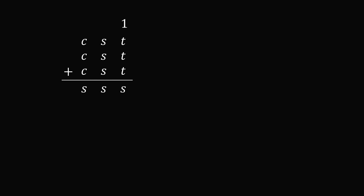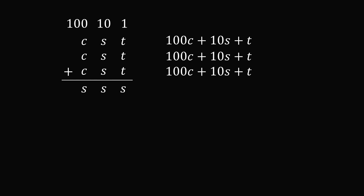Let us now focus on the variables alone and convert this addition problem into a standard equation. Recall: the column on the very right represents the ones (units) column, the next is the tens column, and the next is the hundreds column. So the number CST equals 100C plus 10S plus T. We have three rows of this number, and when we add them together we get SSS, which equals 100S plus 10S plus S.